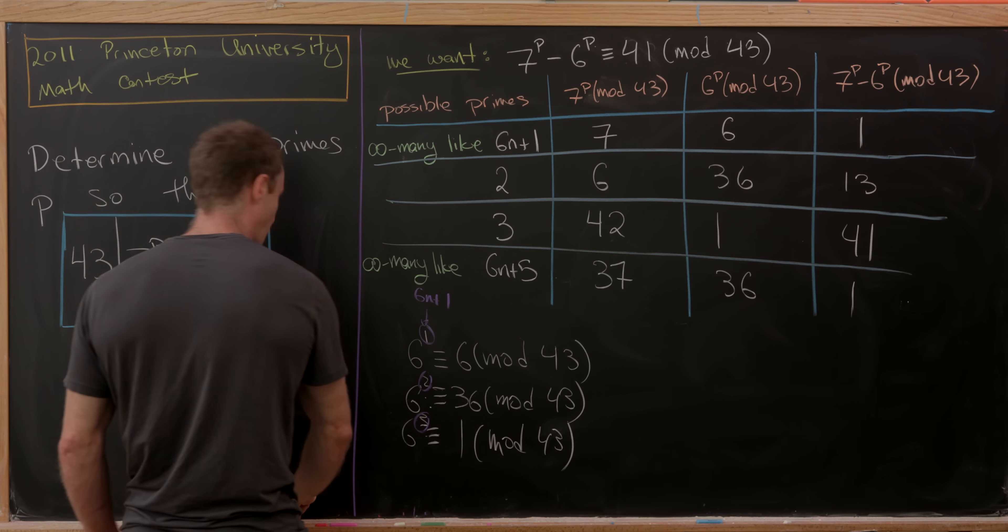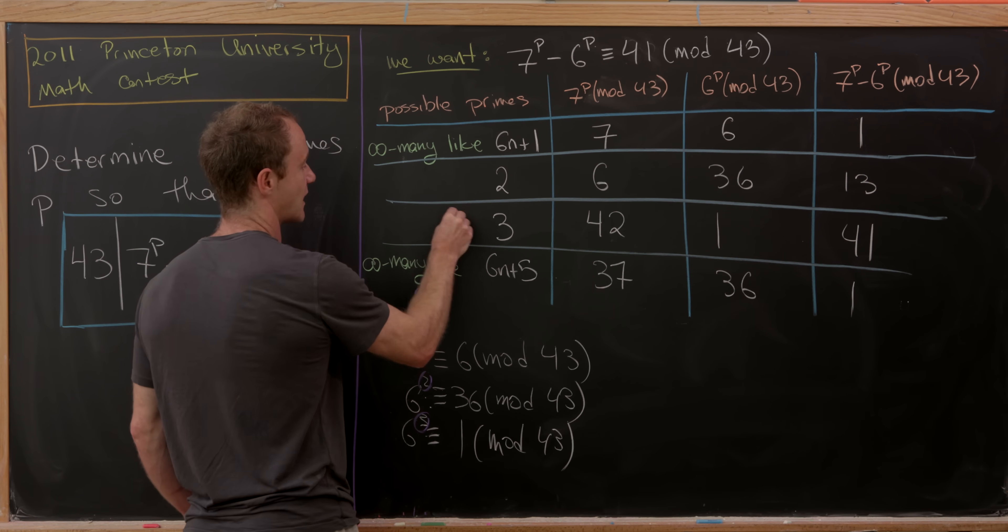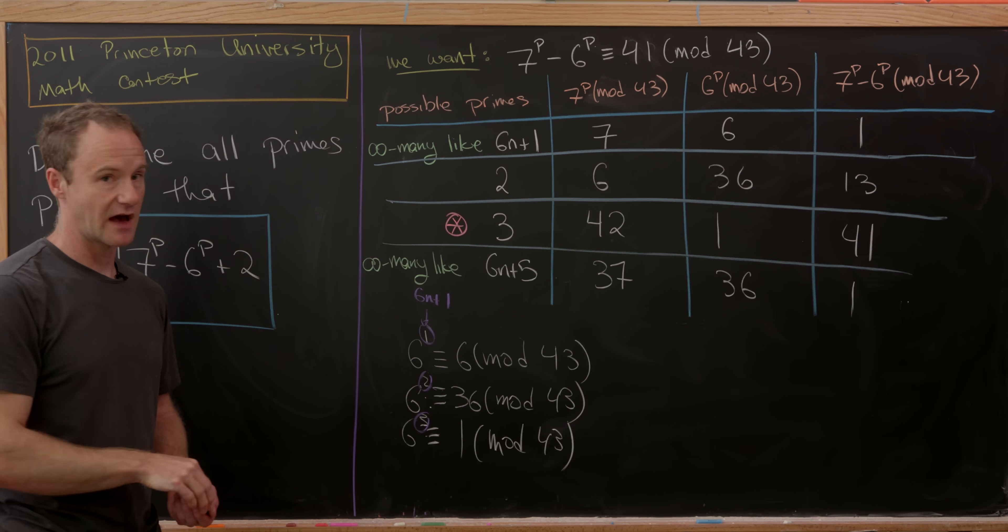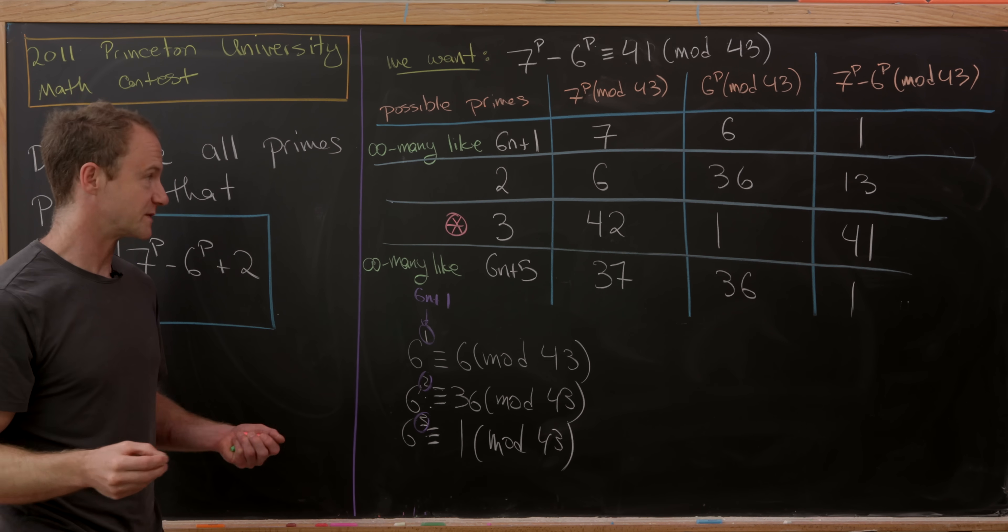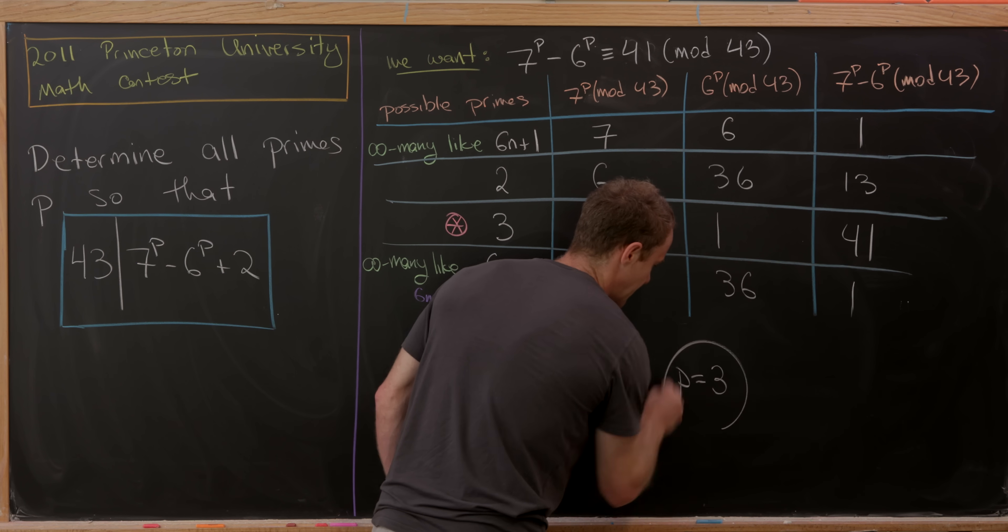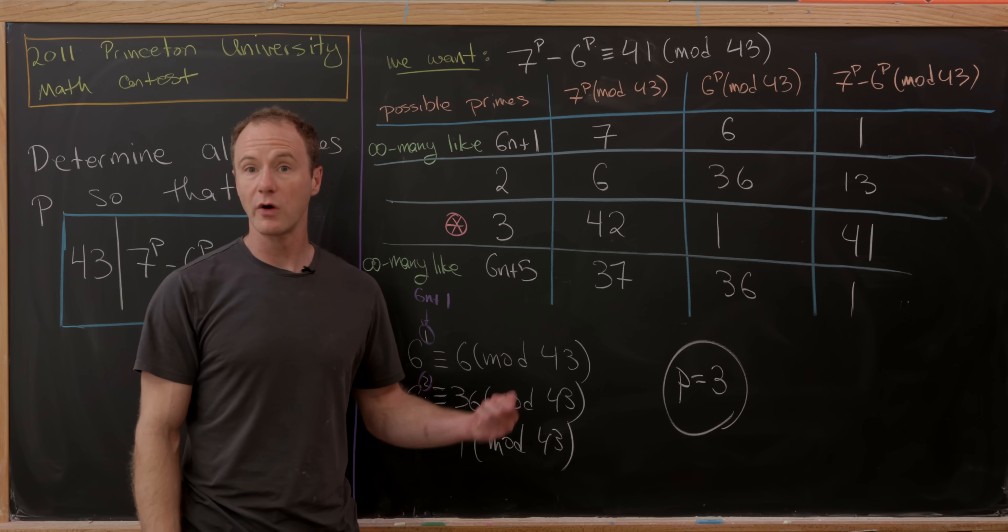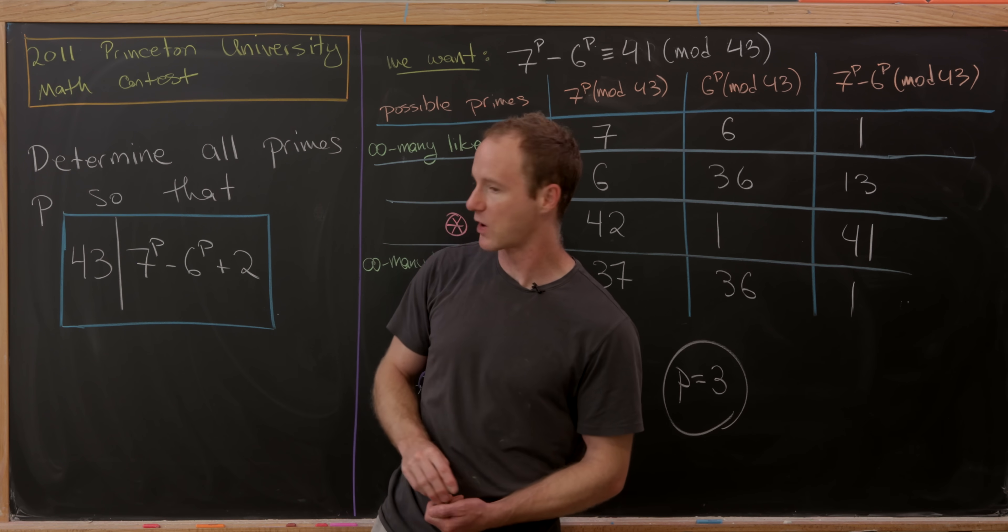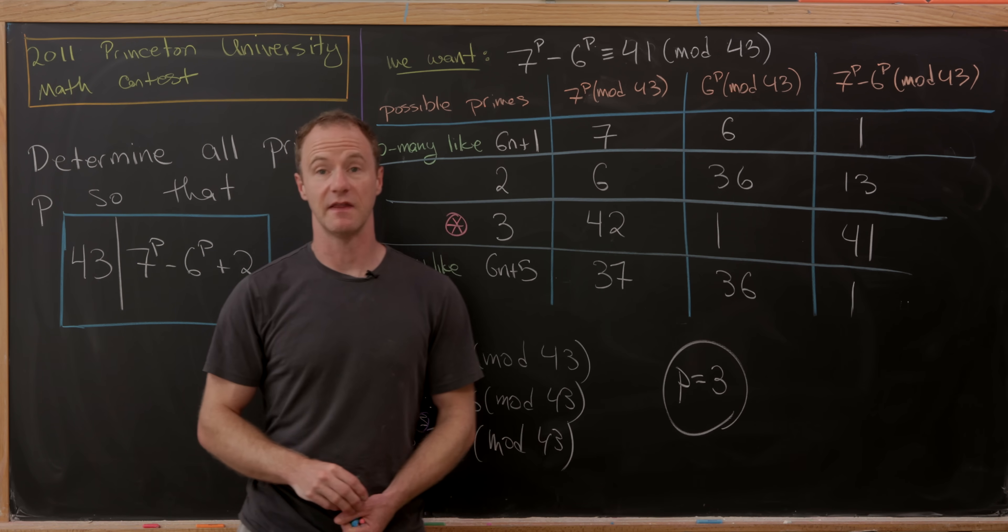So the only solution we get is this one right here, the case when we have a prime of the form 6n+3. In other words, the prime p equals 3. There we've done it. We've just found all the primes that make this condition hold. And that's a good place to stop.